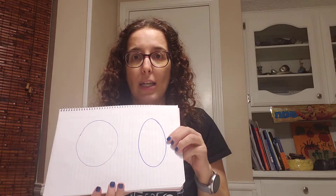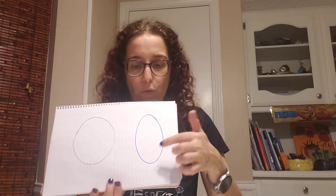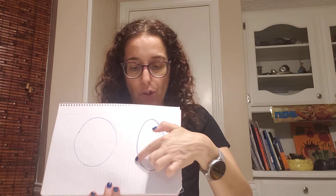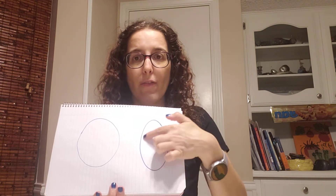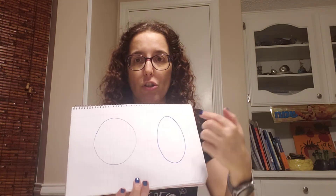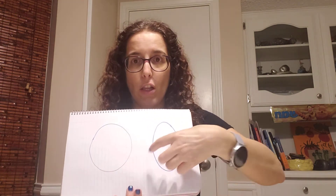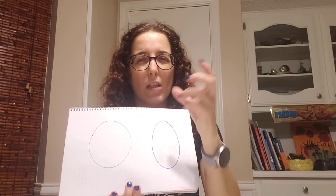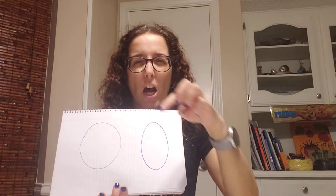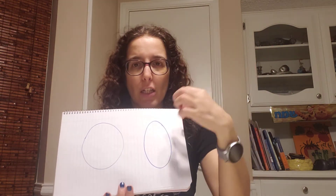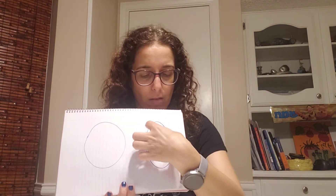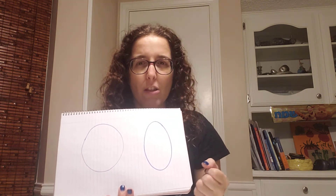And the last shape we're going to talk about is an oval. It's very, very similar to the circle, but the shape is not as full — it's like a little bit too long.